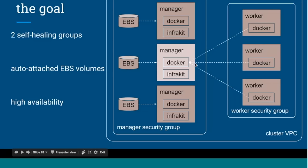One detail to call out: we intend to set up Docker on both managers and workers because that's required for setting up a swarm. But we're running InfraKit only on the manager nodes. The reason is InfraKit doesn't really have any business running on the worker nodes — there's nothing for it to do there, because its interest is in orchestrating the cluster and the configuration is all declarative and immutable.